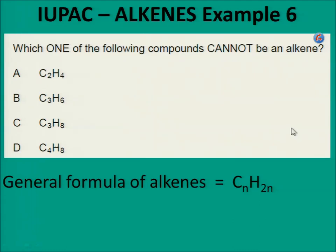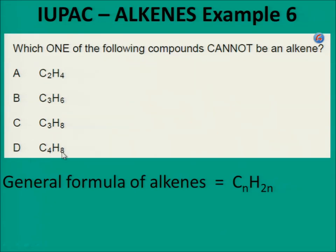Example 6. Which one of the following compounds cannot be an alkene? Use the general formula for alkenes: CnH2n. Option A fits the formula — it is an alkene. Option B is C3H6: 2 × 3 = 6, so it is an alkene. Option D is C4H8: 2 × 4 = 8, so it is also an alkene. Therefore the answer is C, because for 3 carbons the formula gives 2 × 3 = 6 hydrogens, not 8 — so C3H8 cannot be an alkene.